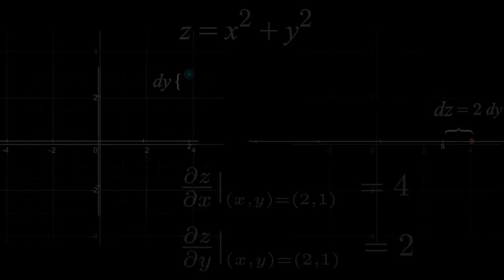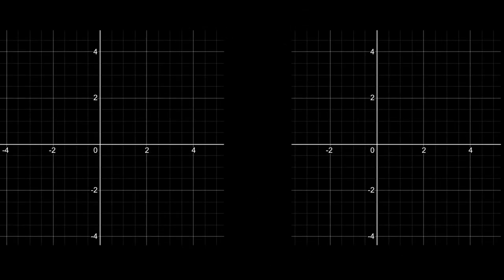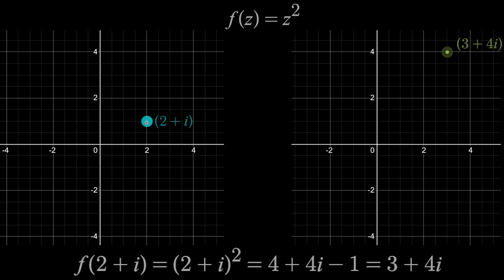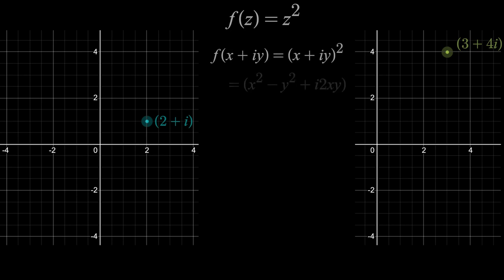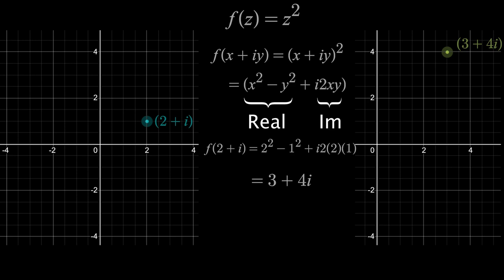The input and the output space will both be two-dimensional. Now we can input any complex number, like 2 plus i, where you'll notice the y-axis is just the imaginary component. If we use the function z squared, then the output is 3 plus 4i, which can be solved with basic foiling. And from here, as we move the input around, the output changes accordingly. One thing that's really important to realize for later is that for any arbitrary input, x plus iy, we can simplify and split the output into its real and imaginary components.